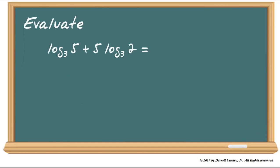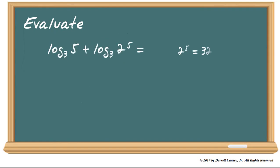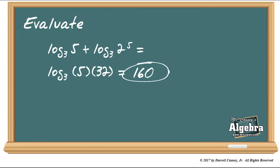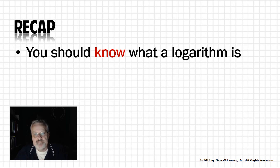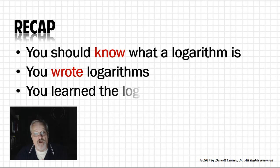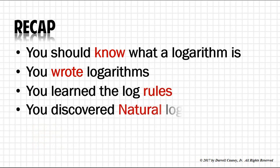So now let's evaluate: log base 3 of 5 plus 5 times log base 3 of 2. We want to simplify it, so let's take the 5 and put it as an exponent. Then we know that 2 to the 5th power is 32. And so log base 3 of 5 times 32 is log base 3 of 160. If you need to, go back and watch this again. Alright, let's recap: you should know what a logarithm is, you wrote logarithms, you learned the log rules, you discovered natural logs, and you practiced a little bit.